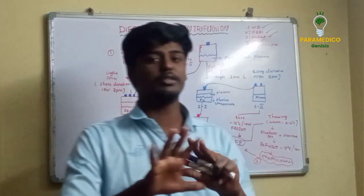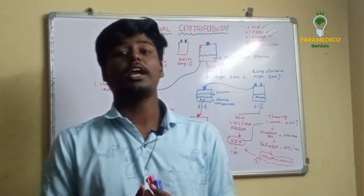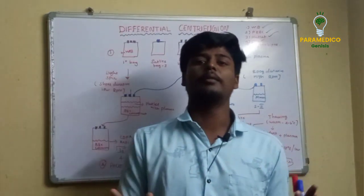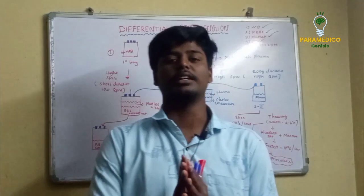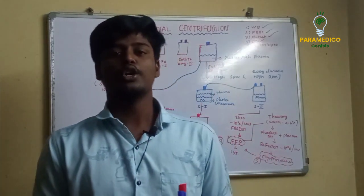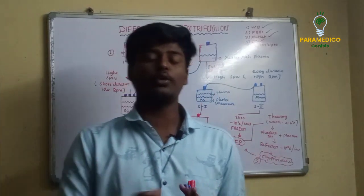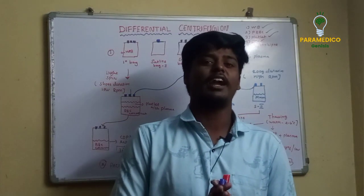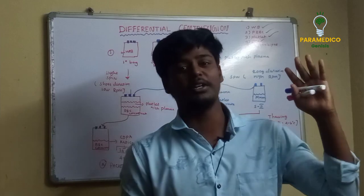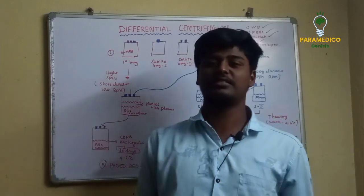So those are the five blood products prepared through differential centrifugation. This has been Paramedicogenesis — thank you for watching.